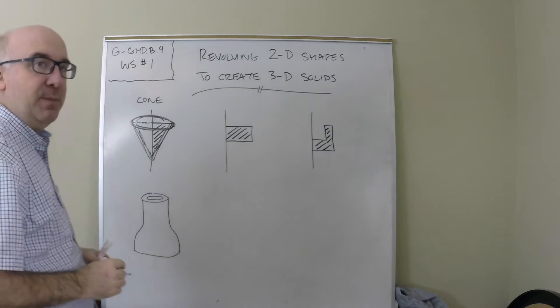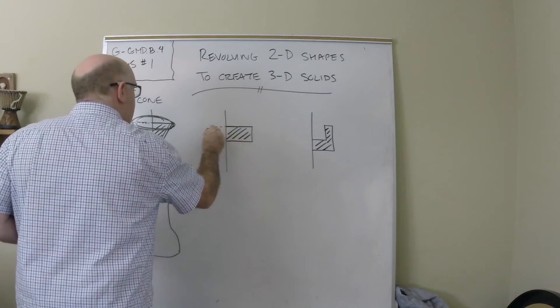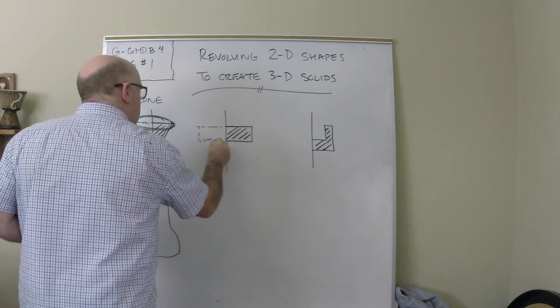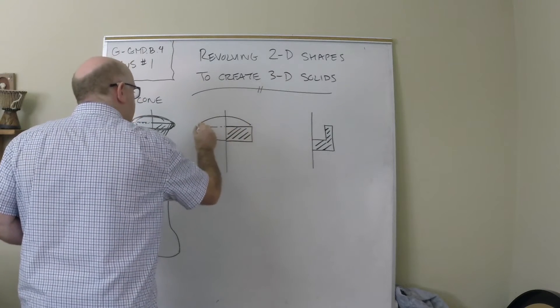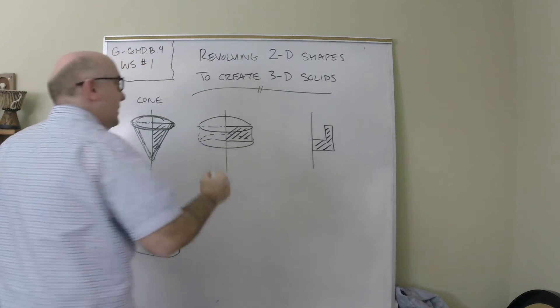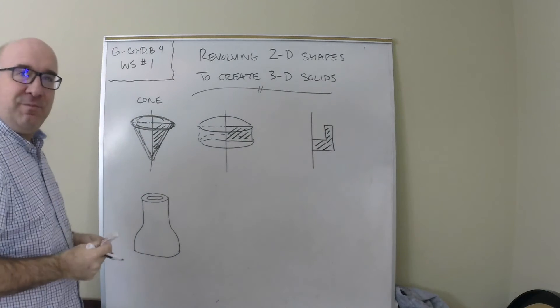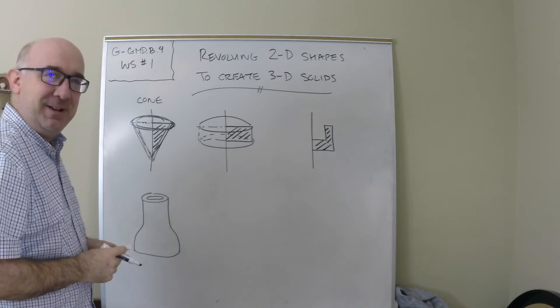When you spin a rectangle, it will also form a spun type of environment here. Can you see how when you spin that, it would form a cylinder when it's all said and done?